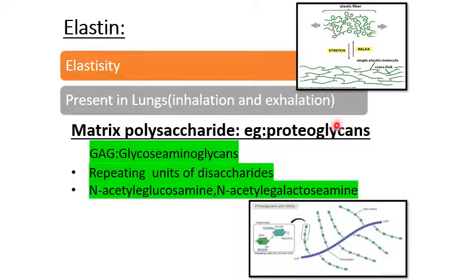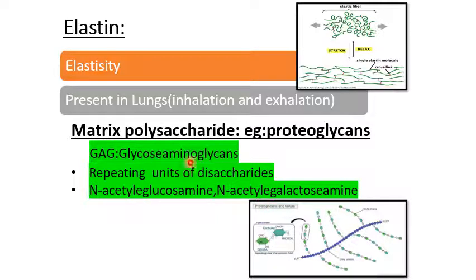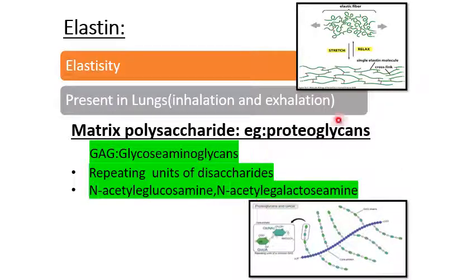The next type of protein is proteoglycan. Proteoglycan is a matrix polysaccharide formed by two different disaccharide linkages — either N-acetylglucosamine or N-acetylgalactosamine, either one can come first. The combination of GAG forms proteoglycans, and as mentioned, the protein plays a major role compared to the polysaccharide, that is the carbohydrate component.